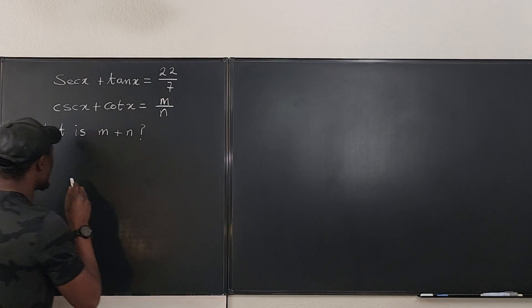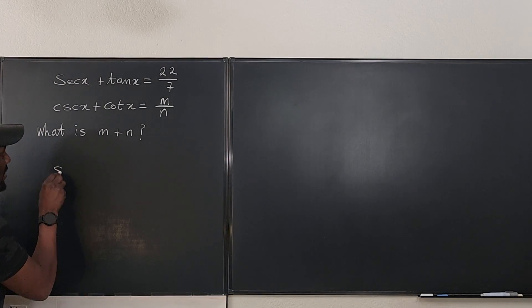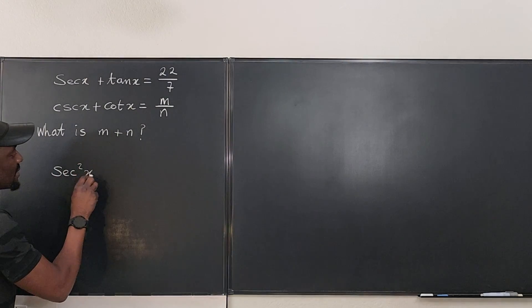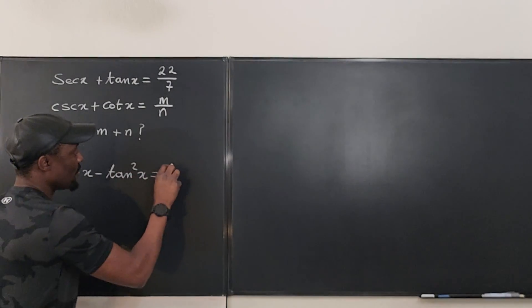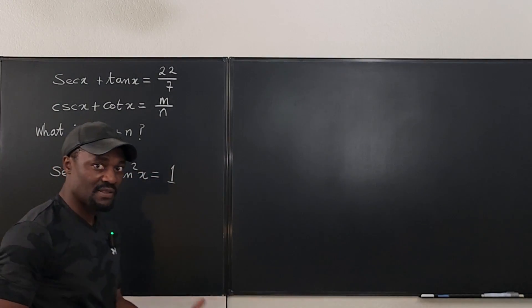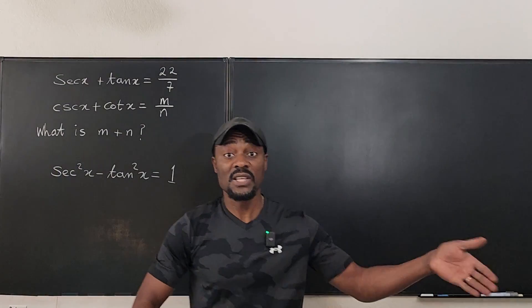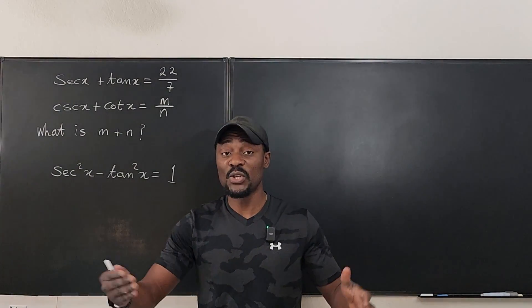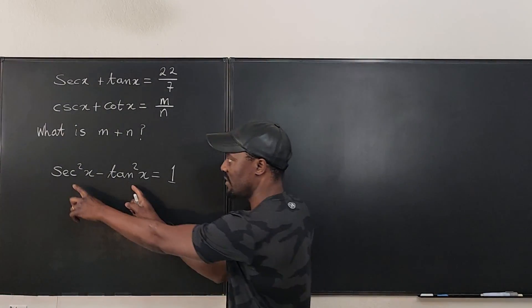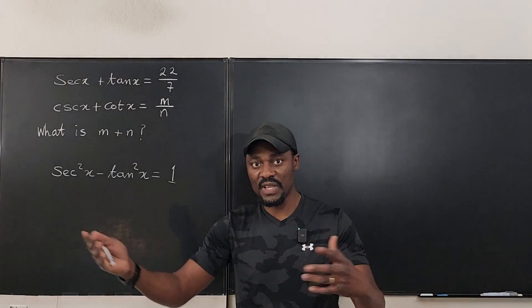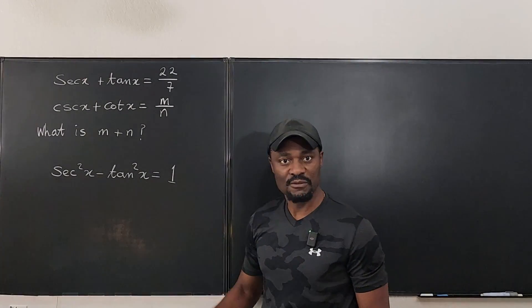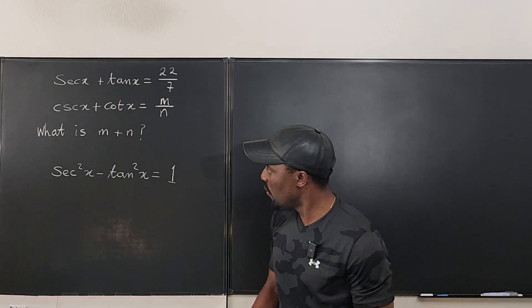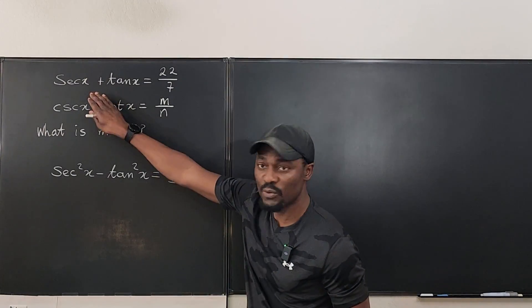We know that secant squared x minus tan squared x is equal to 1. This is from the Pythagorean trig identity from sine squared theta plus cosine squared theta equals 1. That's where this comes from. Just move things around and divide by cosine. You'll find yourself with this expression. So with this, how does this help us?